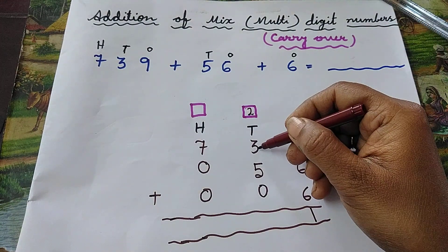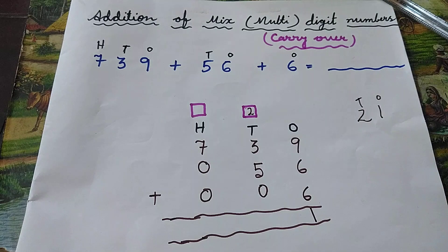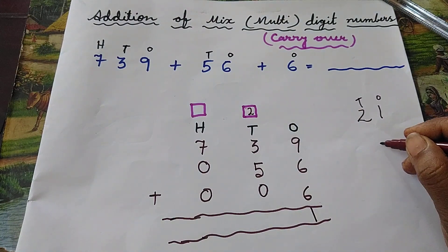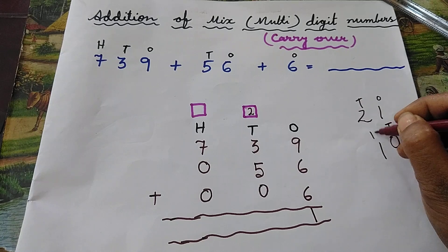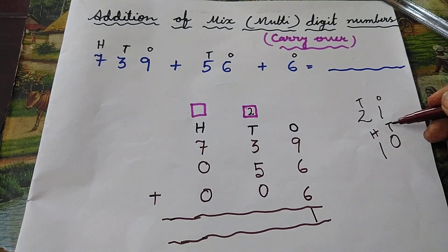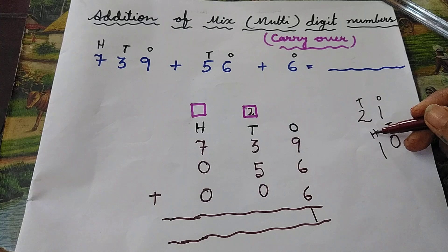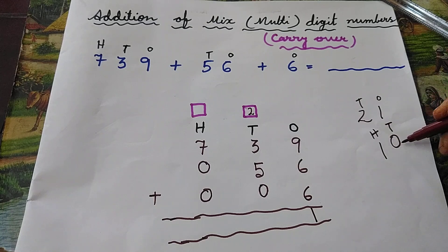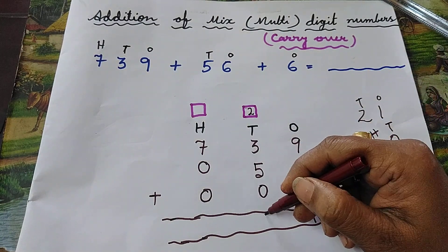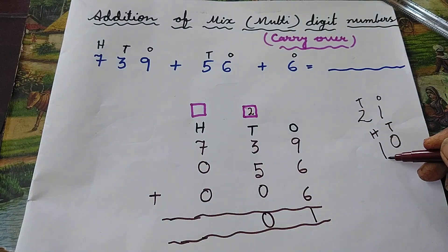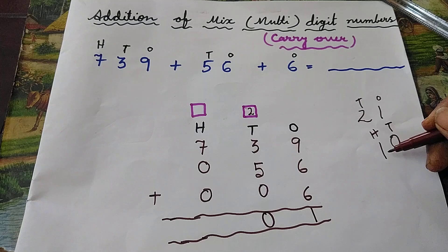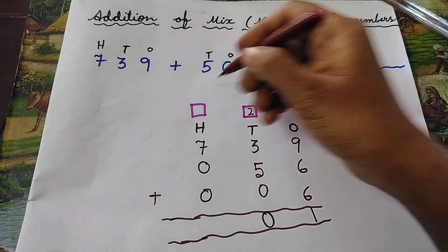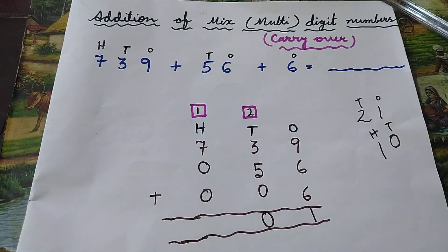Now add all the digits in the tens place: two plus three plus five is equal to ten. Zero belongs to tens place, one belongs to hundreds place — so we write zero in the tens column, and we carry one to the hundreds place.